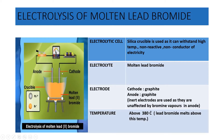The cathode is graphite and the anode is also made up of graphite. Both electrodes are inert because they are unaffected by the bromine vapors evolved at the anode, and the temperature is maintained at about 380 degrees Celsius so that lead bromide will melt.